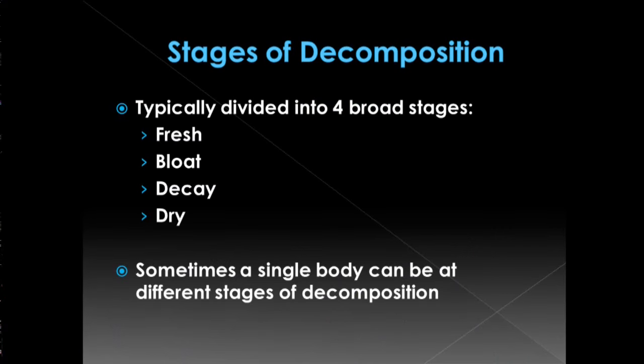The stages of decomposition can be divided into four broad stages: the fresh state, the bloat state, the decay state, and the dry state. Interestingly, a body can actually be in several different stages of decomposition at the same time, depending on whether it's laying partially in a wet environment or a shady area, as these factors contribute to the stages we observe.